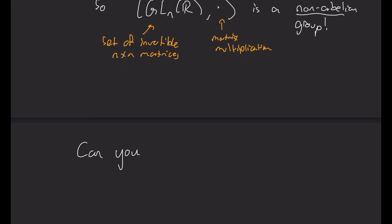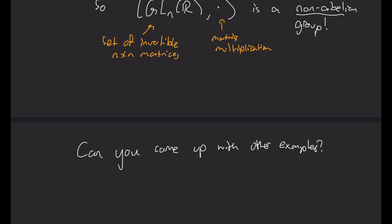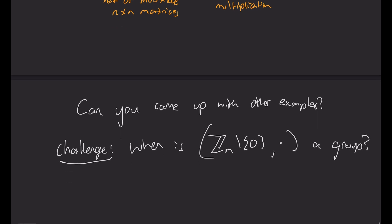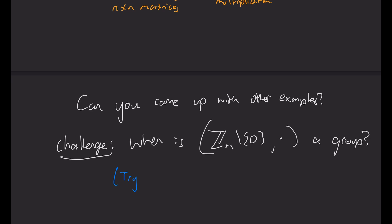So one of the things to think about. Can you come up with your own group examples? And as a challenge to you, can you think of how or when Z_n take away 0 with a multiplication mod n, so that should have a dot sub n, is a group. So this is just a taste for now. We'll come back to them later and mostly study finite groups. But there's plenty of stuff to study herein and new ways of thinking.